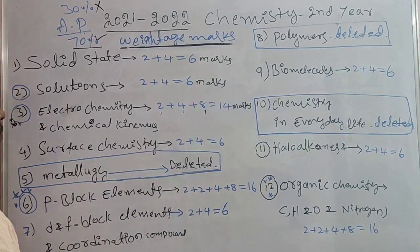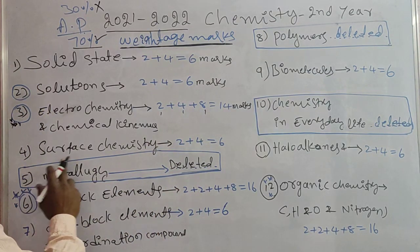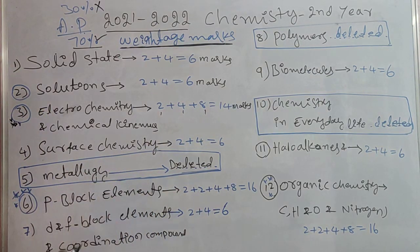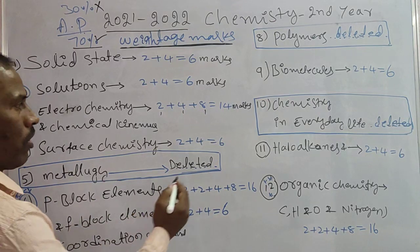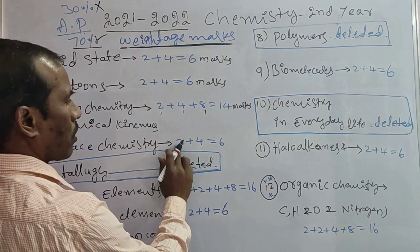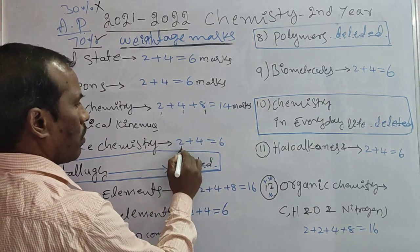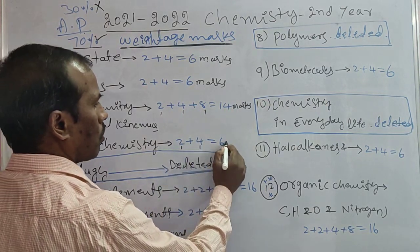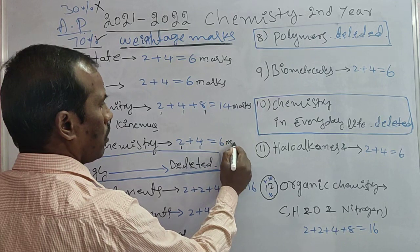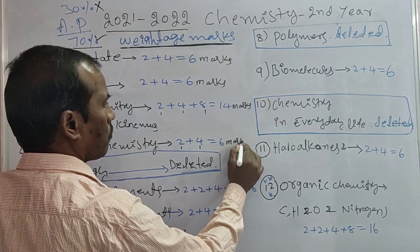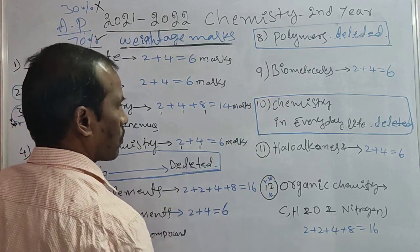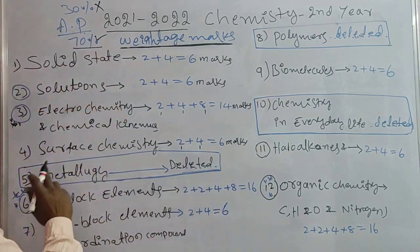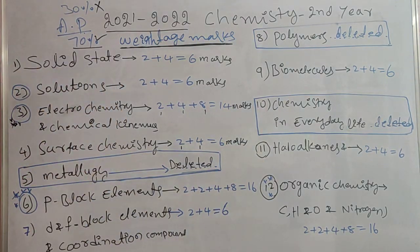Fourth topic: Surface Chemistry. Weightage marks — very short answers 1, short answers 1. Total marks are 6 marks.